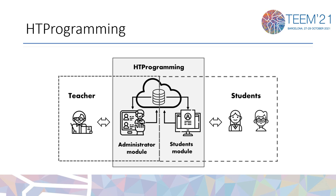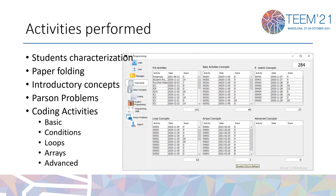The application consists of two modules: the administrative module and the student module. To answer and understand our problem, we created a set of activities to be performed by students and to build their learning profile. Some examples of these activities are: characterization of students, paper folding, introductory concepts of coding, personal problems, and coding activities.